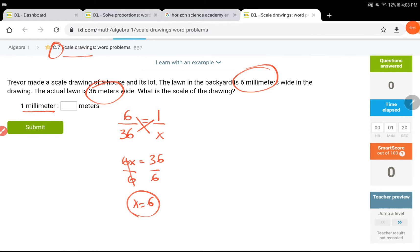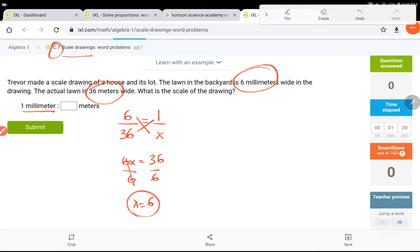But, I know it is about scale drawings. I know if I am setting it up as 6 millimeters equals to 36 meters, I think it is pretty reasonable to assume that one of them is the sketch, the other one is the actual length.